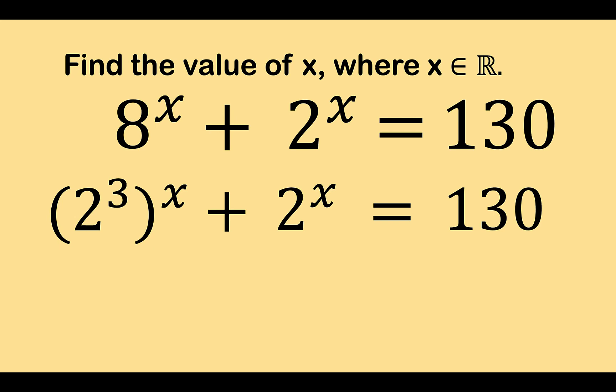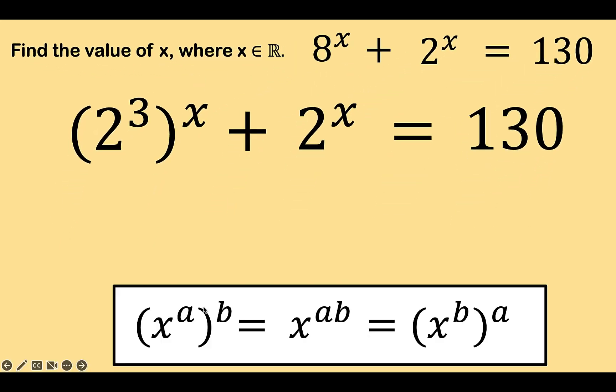Next, let's recall some properties of exponent. If we have x raised to a, all raised to b, we can apply the power rule of exponent to write it as x raised to the product of the two exponents. But since multiplication is commutative, we can also rewrite this back as x raised to b, all raised to a. We are going to apply this in order to interchange this exponent 3 and this exponent x to have this form. Then we copy all the rest.